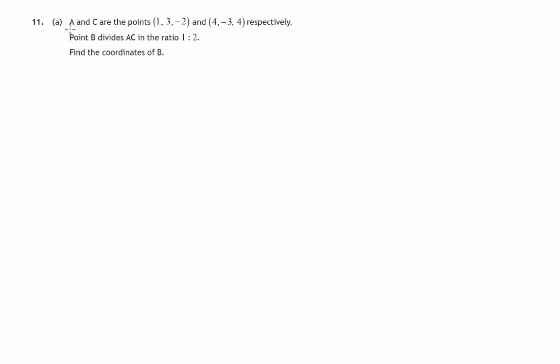Here we have a question where we're given two points in three-dimensional space. There's three coordinates: x, y, and z, two points A and C, and we're told that B divides the line joining A to C in the ratio 1 to 2, and we're asked to find the coordinates of point B.